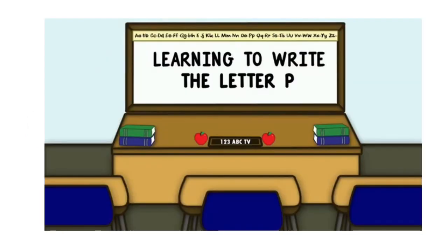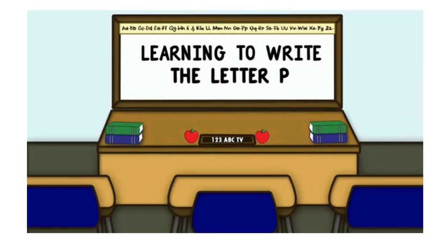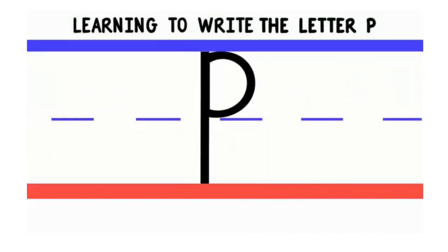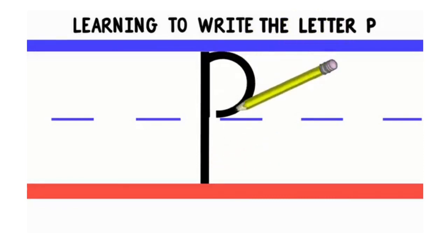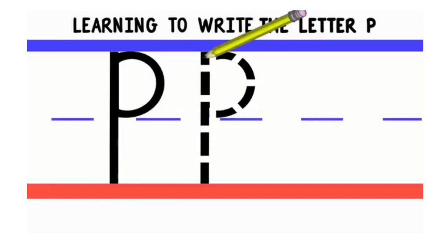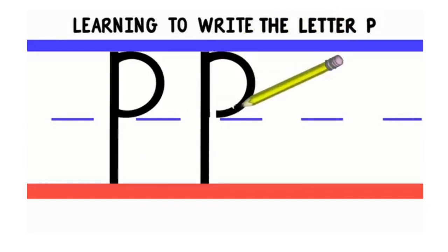Welcome to the classroom. Let's learn how to write the letter P, as in parrot. We'll start with uppercase or big P. To write uppercase P, we'll start at the top and do a straight line down. Then go back to the top and do a curved line around. Good job. Let's do that again. Start at the top and do a straight line down, then go back to the top and do a curved line around. Good job.